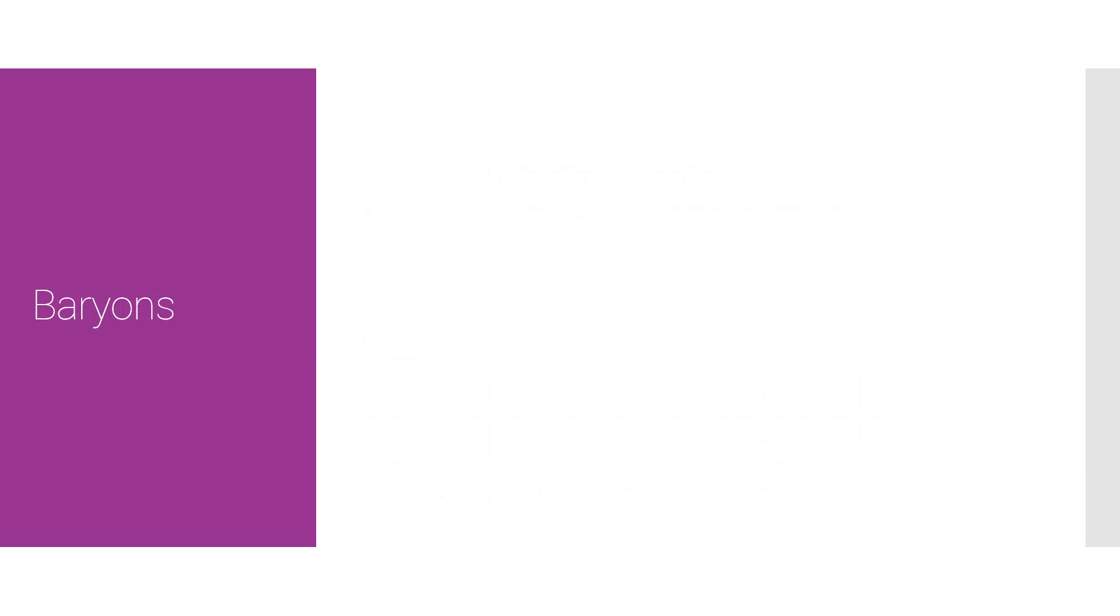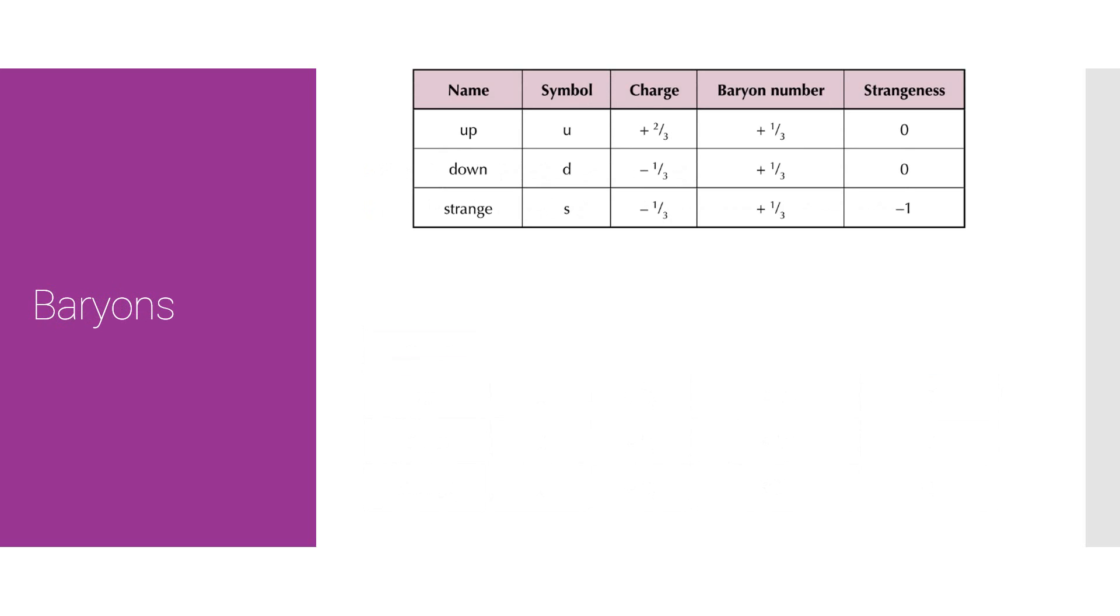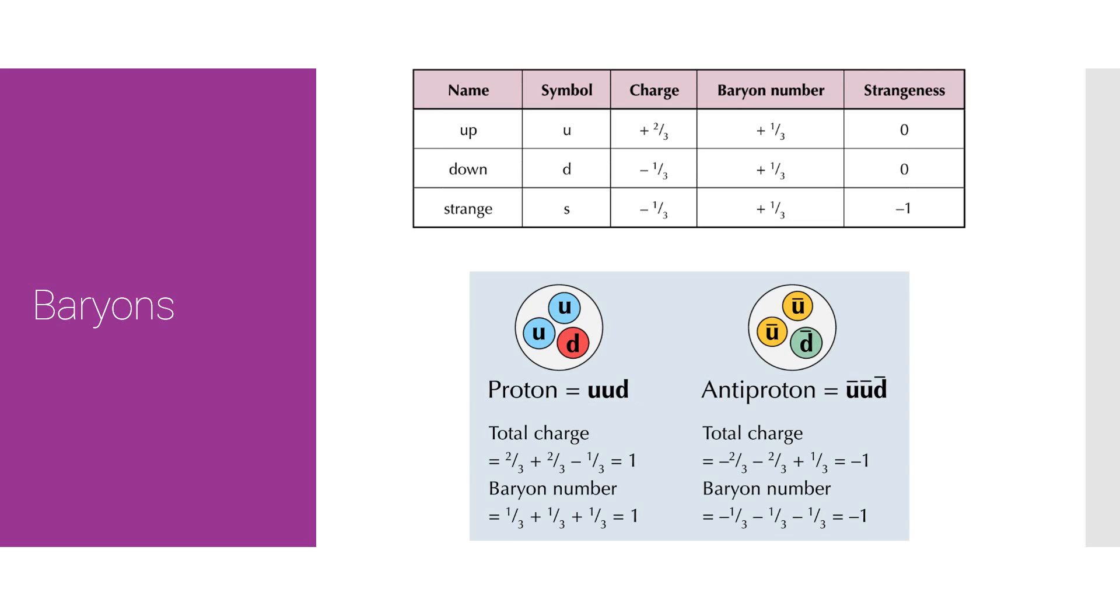Let's talk about baryons. As we know, baryons are made up of three quarks, and here's how. If we look at how a proton and an anti-proton are made, a proton is made up of up, up, down. This is because the total charge adds up to one, as you can see, and the baryon number adds up to one.